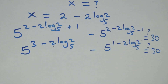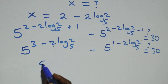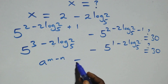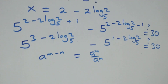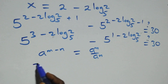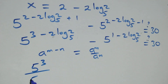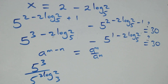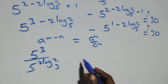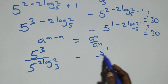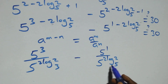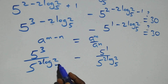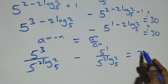We apply the index law: a raised to power (n minus m) is the same as a raised to power n over a raised to power m. So we have 5 raised to power 3 over 5 raised to power 2 log 2 base 5, minus 5 raised to power 1 over 5 raised to power 2 log 2 base 5, equals to 30. We bring the exponent 2 back up using the power rule: 5 raised to power log 2 squared base 5.